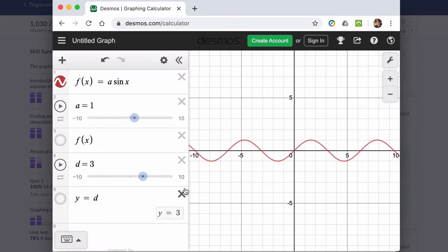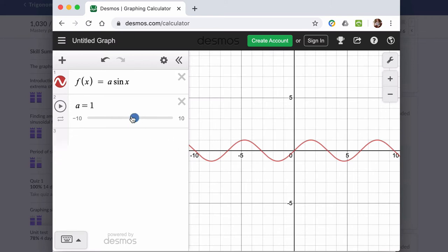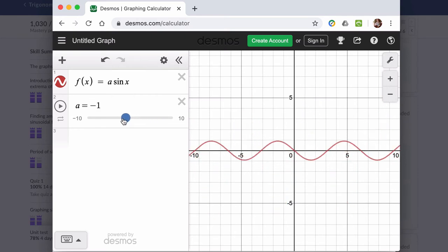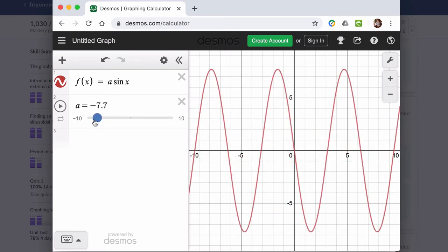We'll add a slider for that. Get rid of this other thing I have here. That was for midlines. What happens to our function as we change this number? Let's say we make it increase the amplitude, and then decrease the amplitude here.